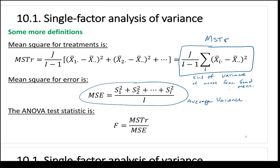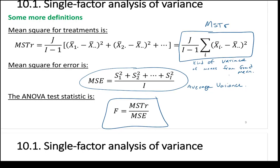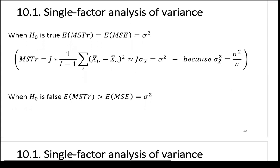This test statistic MSTR divided by MSE has an F distribution with two sets of degrees of freedom. We call it capital F because it comes from the F distribution. When H-zero is true, the expected value of MSTR equals the expected value of MSE, which equals the variance of the original population — since all populations share the same variance.